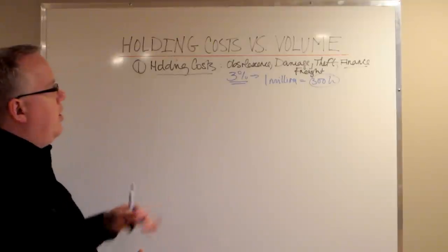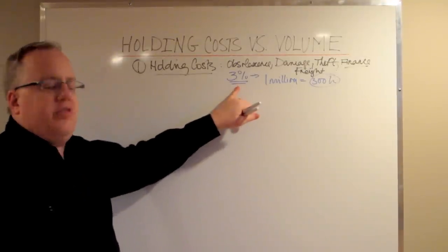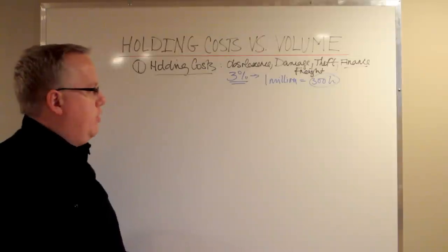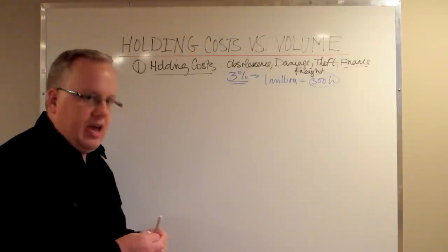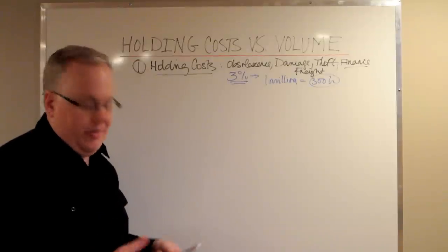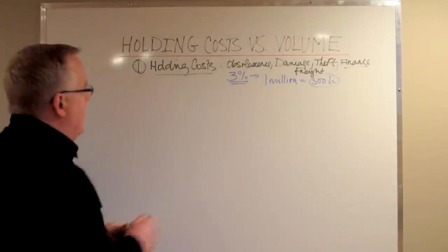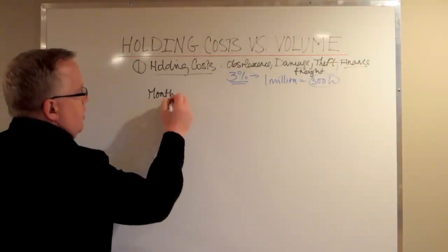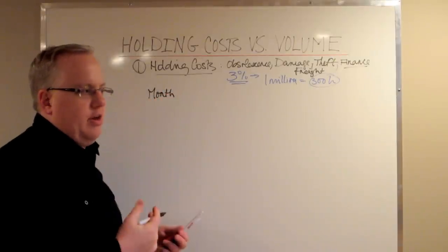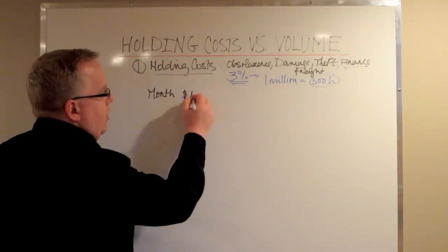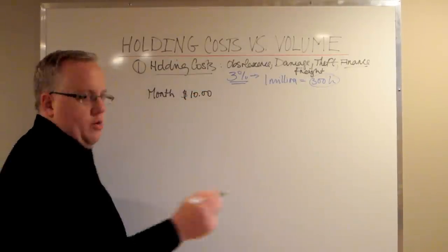So what we want to do is understand that this 3% monthly holding cost is what we're going to base our decision on whether or not we should buy more or maintain our current position. We're going to use this 3% and multiply it by the product's COGS. So let's say month number one, you buy a product. It costs you $8 in freight to get into your warehouse. Let's say it's $10 when it lands into your warehouse.